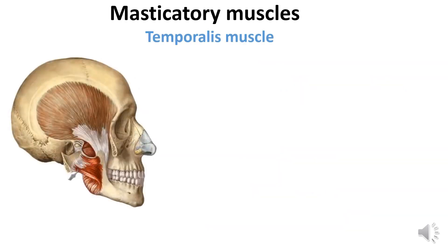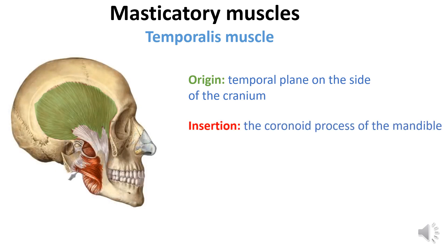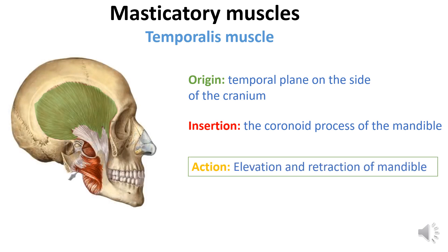The temporalis muscle is fan-shaped. It originates from the temporal plane on the side of the cranium and inserts into the coronoid process of the mandible. This muscle elevates and retracts the mandible.